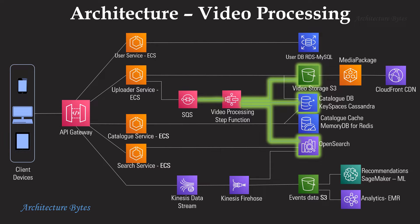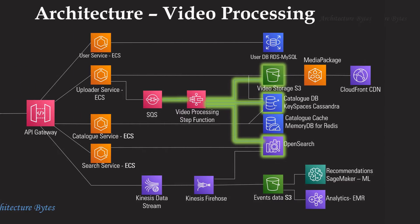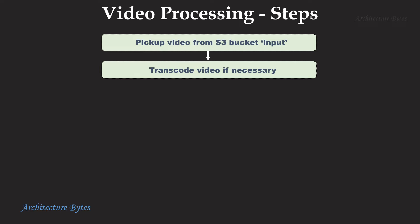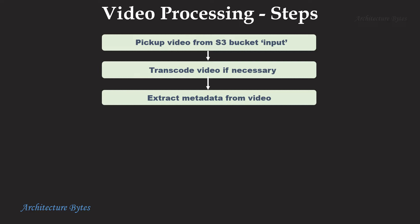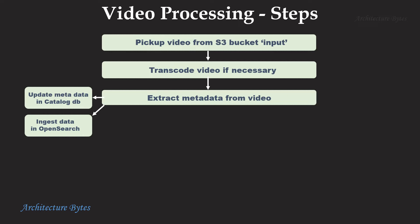Video is processed in multiple steps by AWS Step Functions. We have two S3 buckets — input and output. A video is picked up for processing from the input bucket and transcoded into a desired or common format as necessary. Next, metadata is extracted from the video, such as date created, author, data rate, location, etc., and sent for storage and indexation.